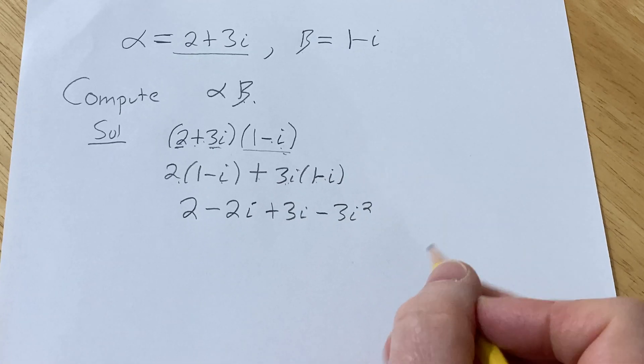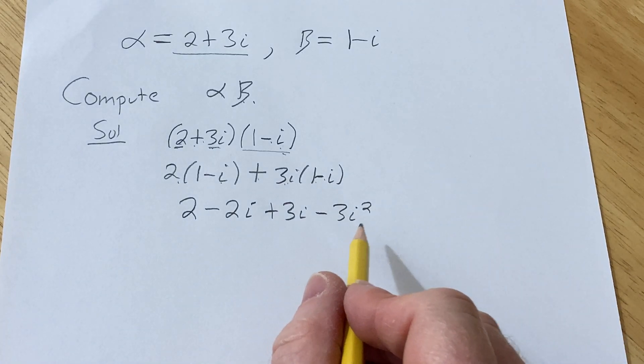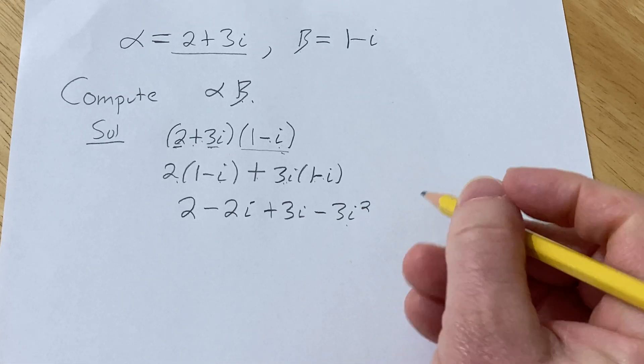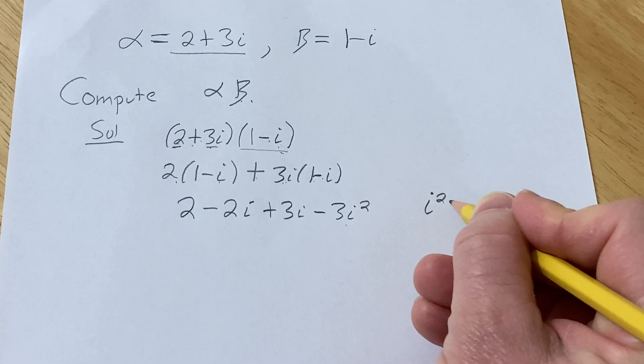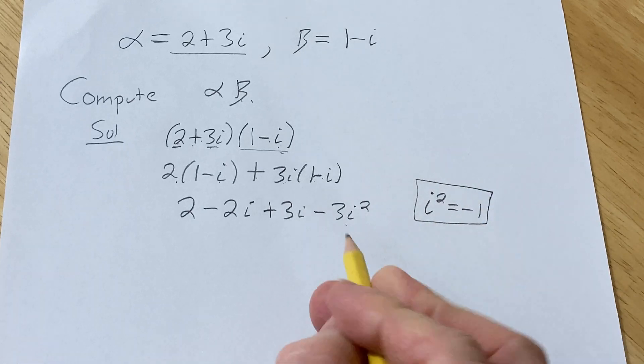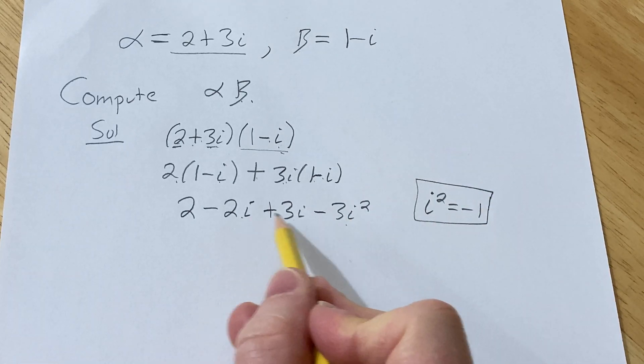Alright, now we're going to combine like terms, but notice something important. i squared is here. So i squared is equal to negative 1. So we're going to make that substitution and combine these.